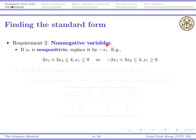Requirement two is about non-negative variables, which is a little bit harder. A variable may be non-negative, non-positive, or free. If it is non-positive, we need to replace it by negative xi. For example, if x1 is non-positive, replace x1 by negative x1 — this new x1 becomes non-negative. You also need to change the sign of the coefficient of x1 in every constraint and in the objective function, since x1 is actually negative x1 now.